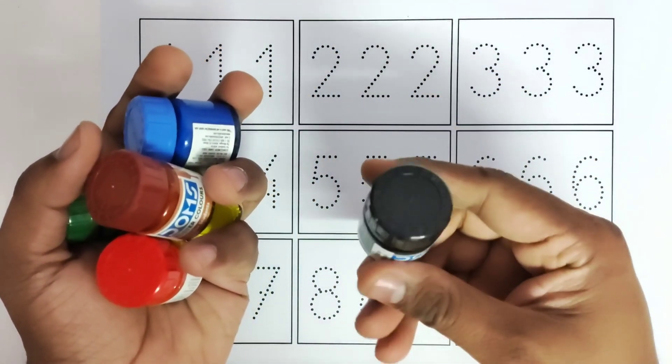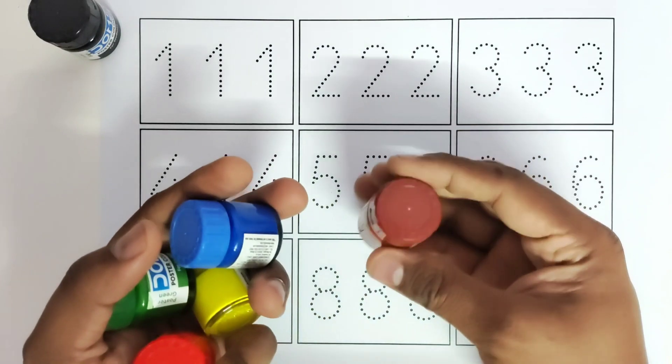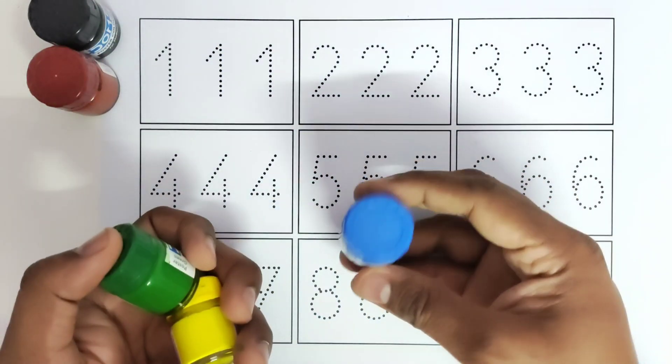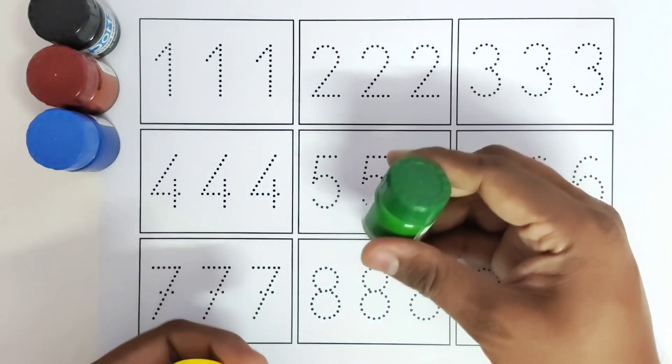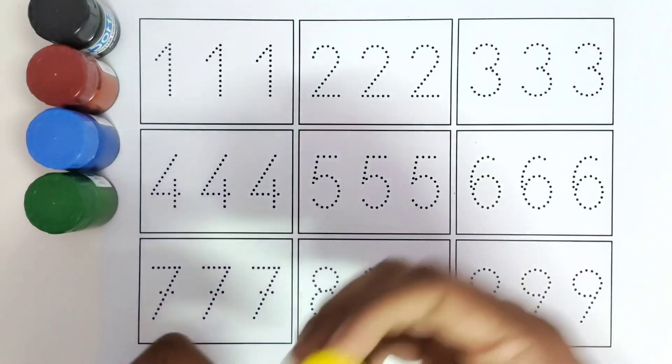This is black color. This is brown color. This is blue color. This is dark green color. This is light yellow color. This is red color.